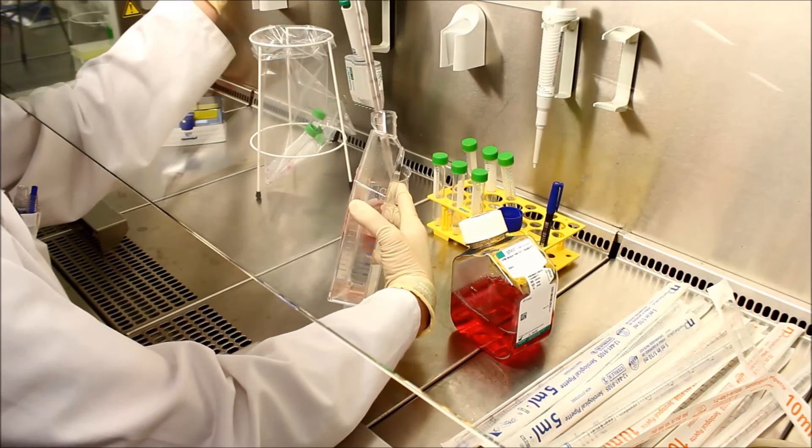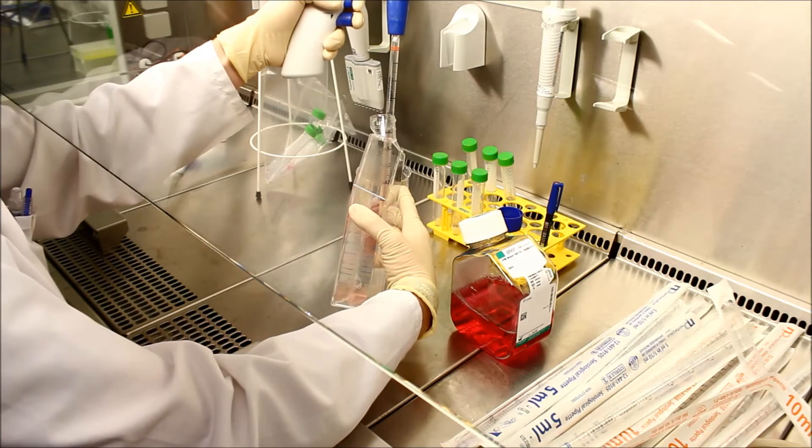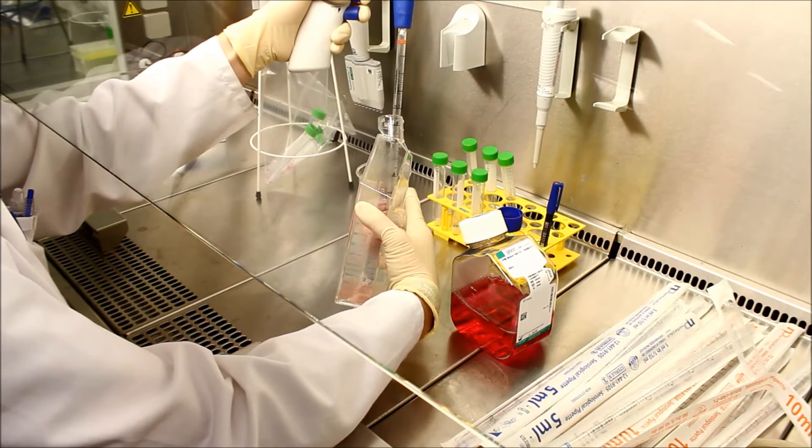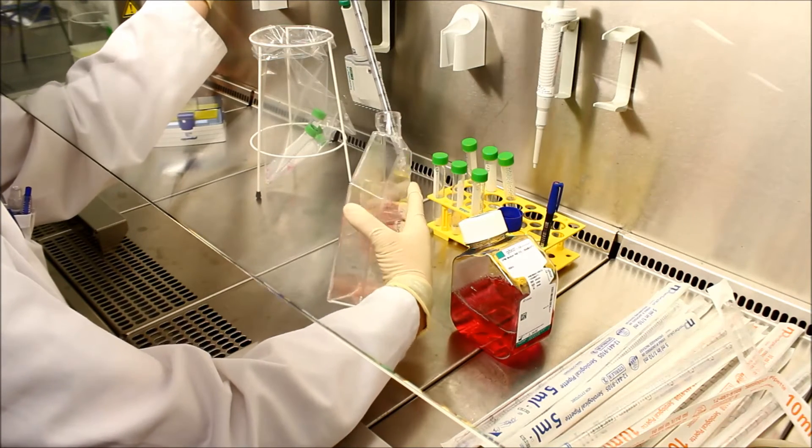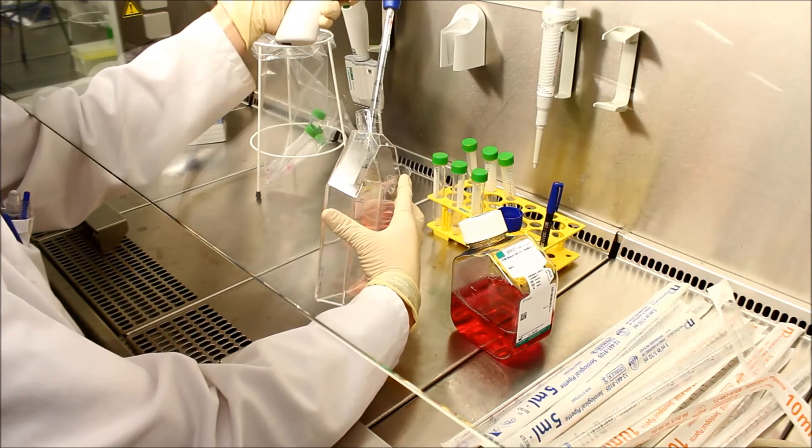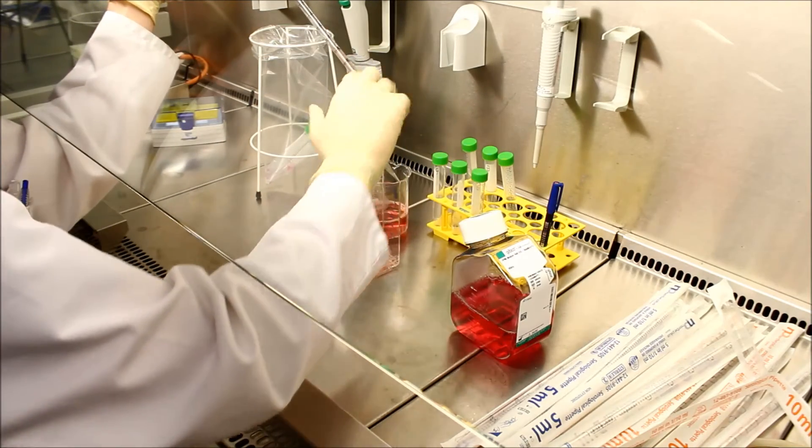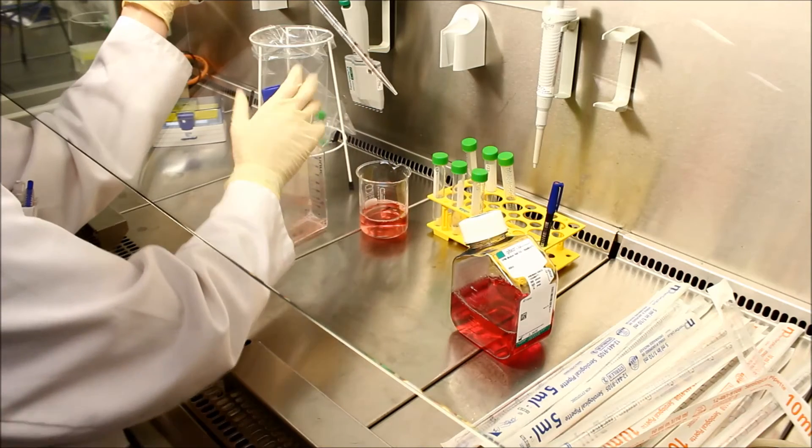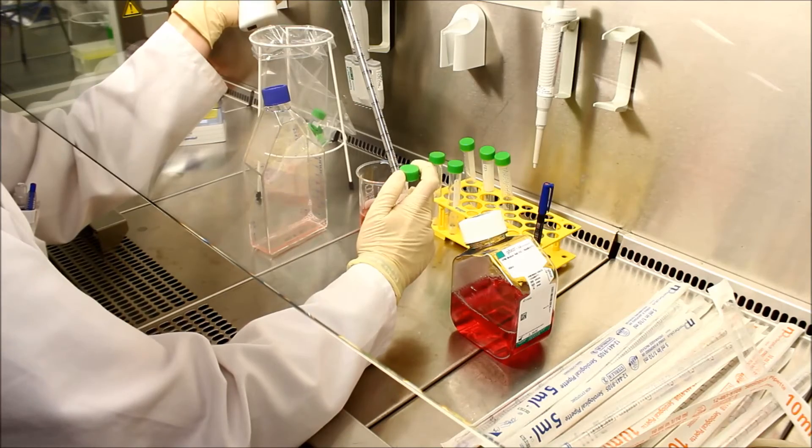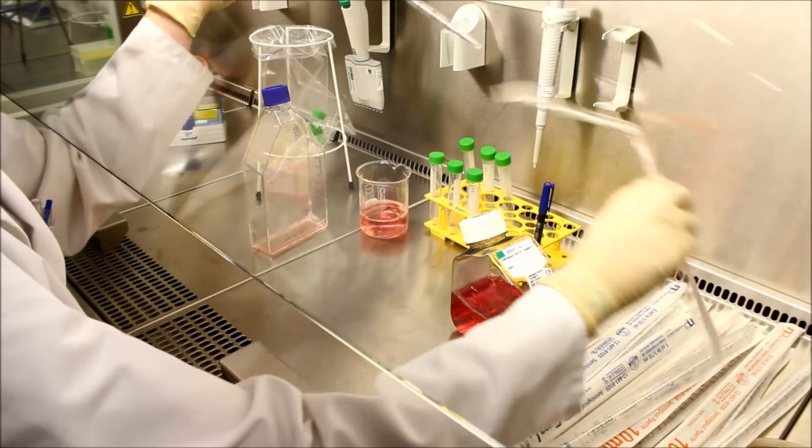Now the cells are no longer digested by the trypsin, but rather the proteins of the medium. After this, a portion of the cells can be used for splitting. They are placed in a centrifuge tube. The other part can now be used for experiments.